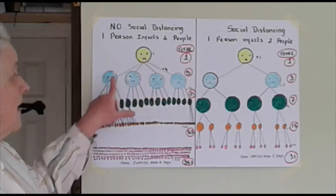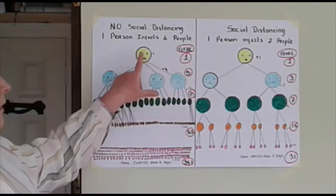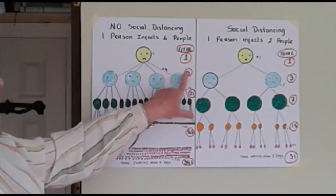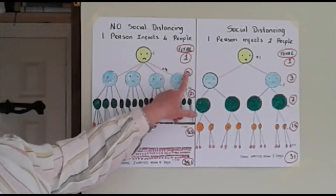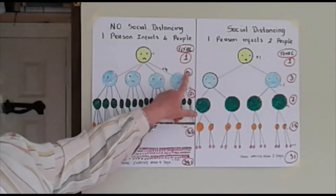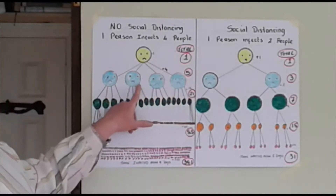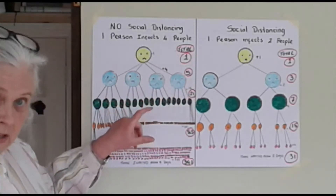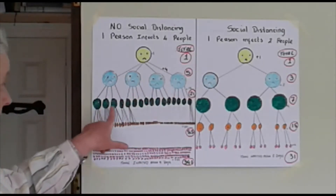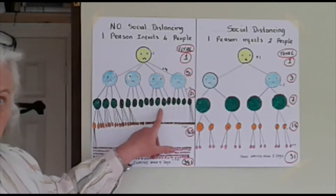So by day two we have four more people plus Mr. Sneezy, and now we have five people with the virus. These guys don't believe in social distancing either, so they go out and about and they spread it to four people each.